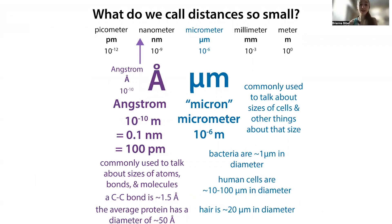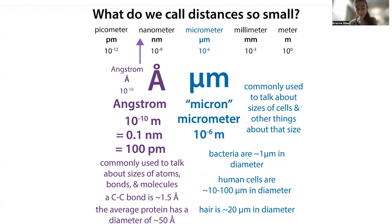Human cells are about 10 to 100 microns in diameter, and a hair is about 20 microns in diameter. Bacteria are a lot smaller than human cells, which makes sense if you think about the fact that our mitochondria — the powerhouses of our cells — actually come from a really long time ago when a cell swallowed a bacteria. So our cells have to be a lot bigger than bacterial cells. The size of cells varies greatly — your average red blood cell is about 5 to 8 microns in diameter, while nerve cells can be long and skinny.